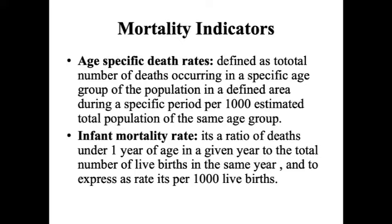Age-specific death rates are defined as the total number of deaths occurring in a specific age group of the population in a defined area during a specific period, per 1000 estimated total population of the same age group. For example, to find how many deaths occur between 15 to 24 years, we use age-specific death rates. Infant mortality rate is the ratio of deaths under one year of age in a given year to the total number of live births.